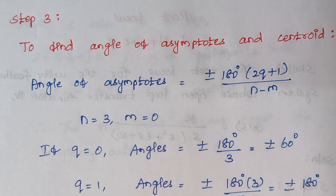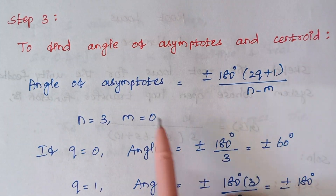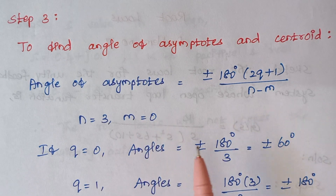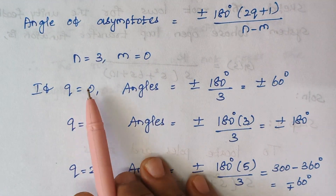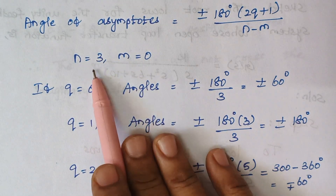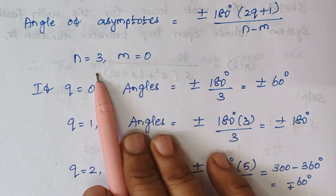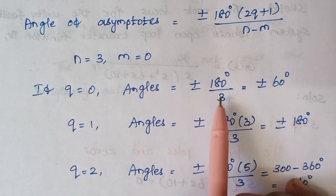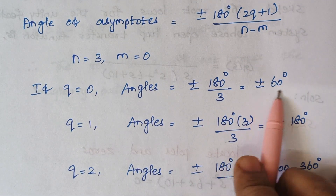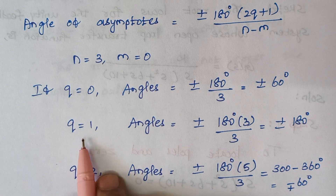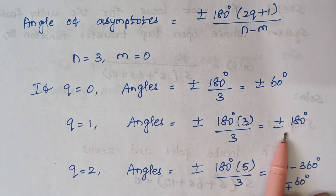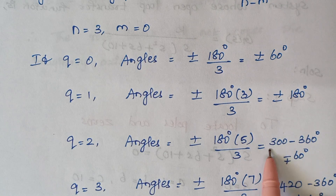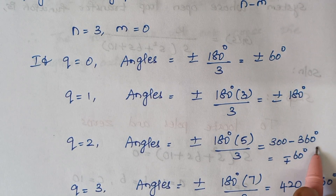Step 3 is finding the angle of asymptotes and centroid. The angle of asymptotes formula uses n for number of poles and m for number of zeros. We substitute values of q from 0 to n−m−1, which is 0 to 2 here since n−m=3. When q=0: 180/3 = 60 degrees. When q=1: the angle is plus or minus 180 degrees. When q=2: solving gives 300, and 300 minus 360 gives minus 60 degrees. When q=3: gives 420, and 420 minus 360 gives plus or minus 60 degrees.